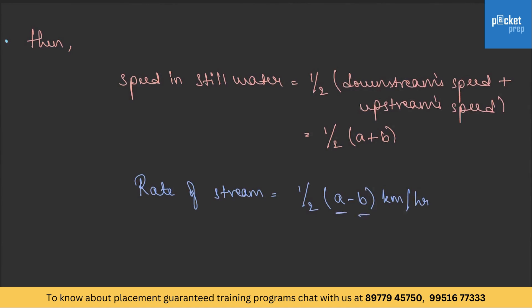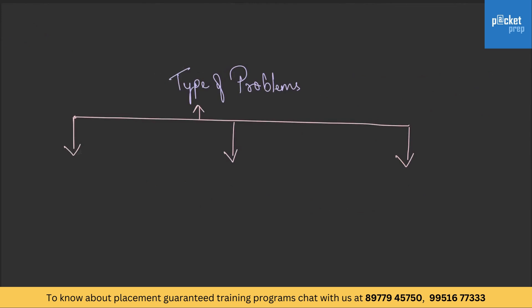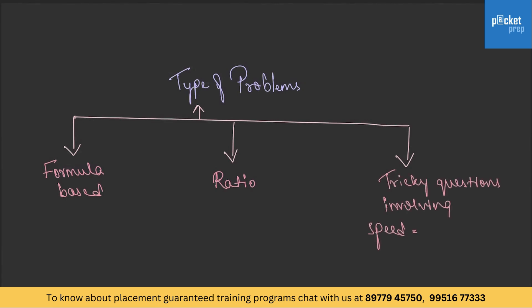These are the basic formulas we need to remember to solve any questions on boats and streams. The first type of problems are purely formula based — questions are directly solved using the formulas. The second type involves ratio. The third type involves tricky questions using the formula: speed equals distance divided by time. You must remember this formula.